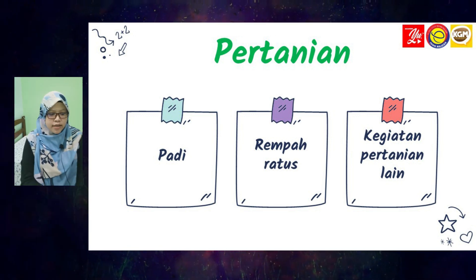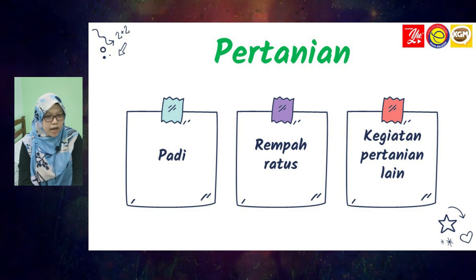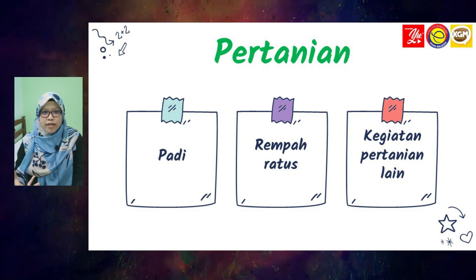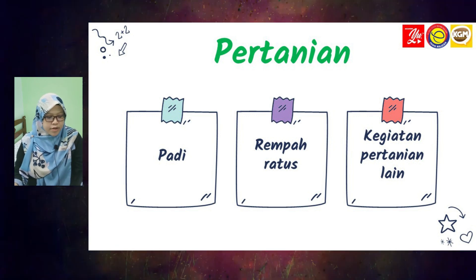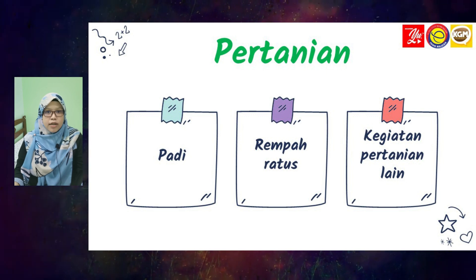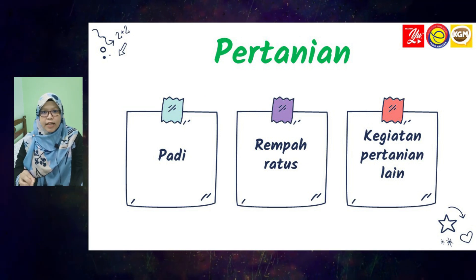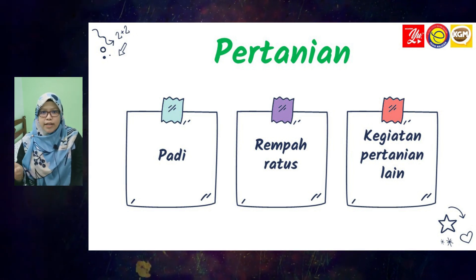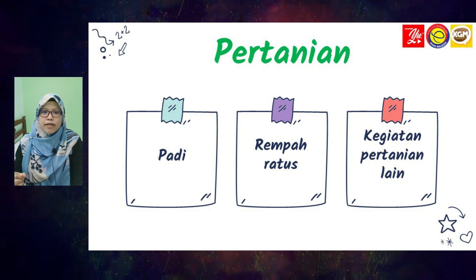Alam Melayu mempunyai tanah yang subur untuk aktiviti pertanian. Aktiviti pertanian mula-mula dilakukan untuk menyara diri dan keluarga. Tapi bila lama-lama ada lebihan pada hasil pertanian, ia dibekalkan untuk memenuhi kehendak dan keperluan penduduk yang tidak terlibat dalam aktiviti pertanian. Bila kita dah ada banyak, kita akan jual dan pasarkan pada orang lain.